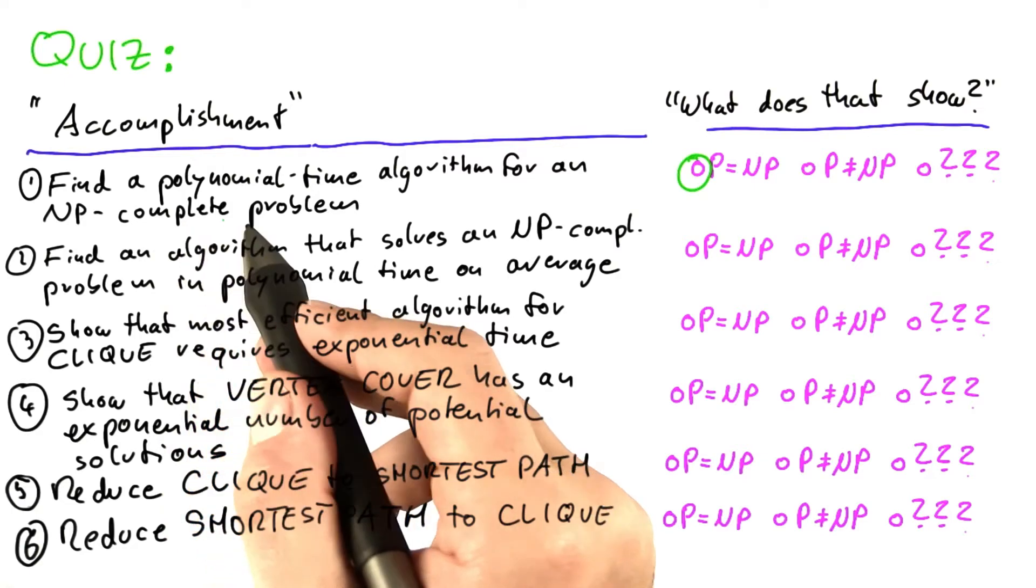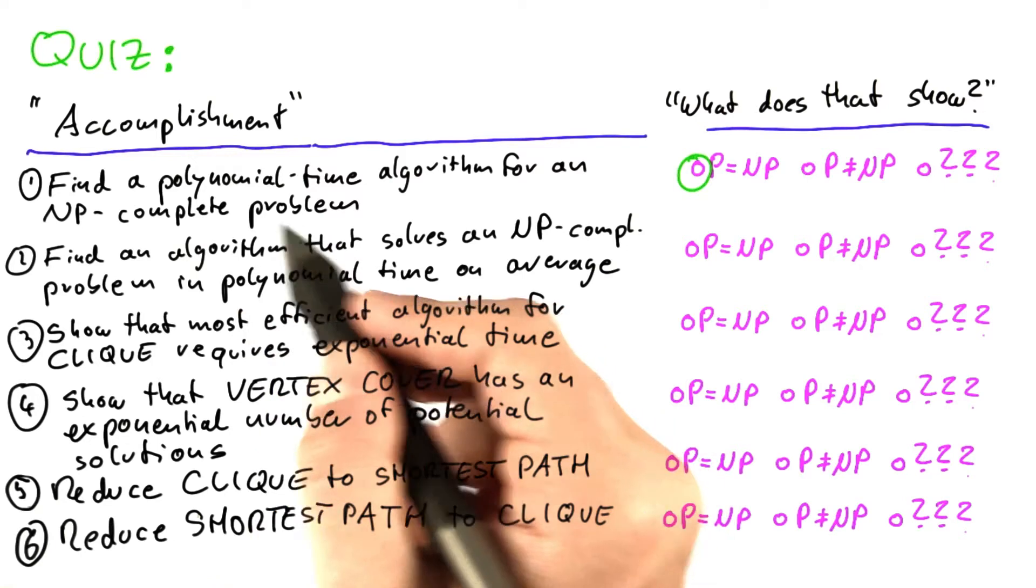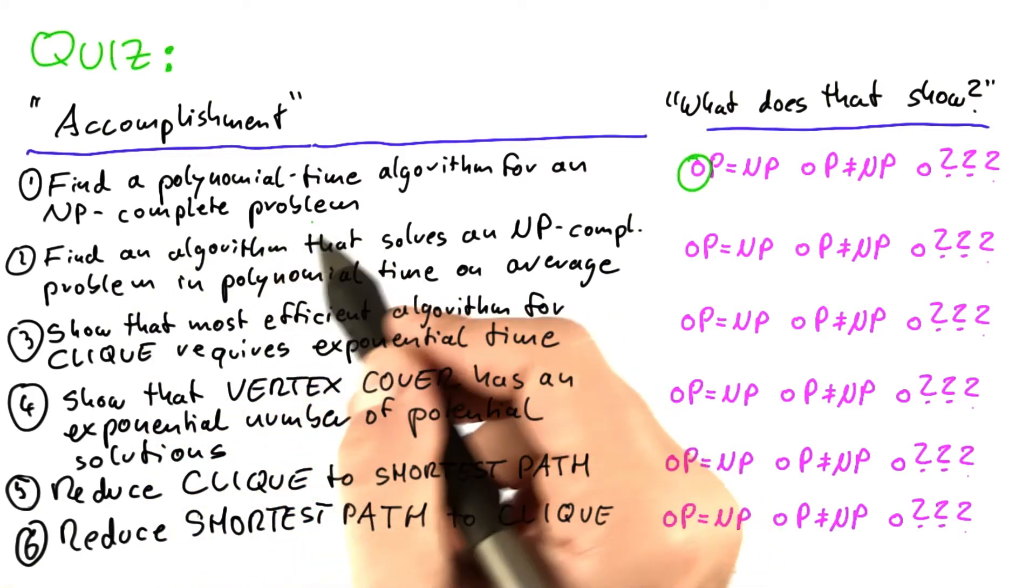It means it's among the hardest to solve problems in NP. So a polynomial time algorithm for this problem will solve any other NP-complete problem in polynomial time as well.